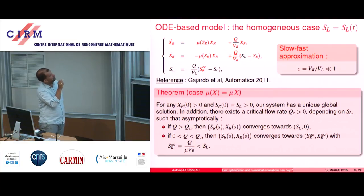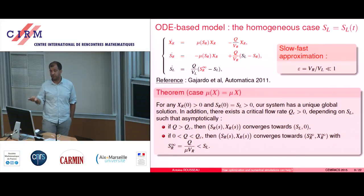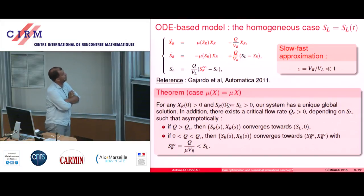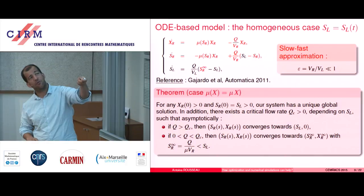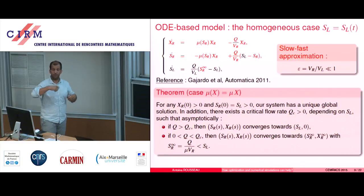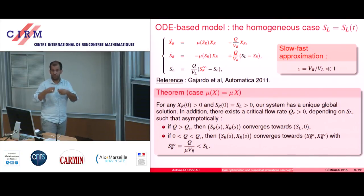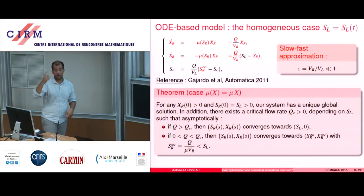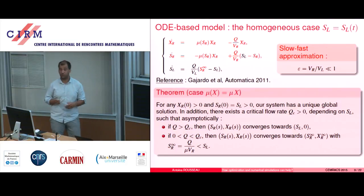But if you have a positive initial concentration of biomass and a positive concentration of pollution, then there is a critical flow rate Qc, which is such that if you pump faster than Qc, then you're going to go too fast. Your bioreactor won't have the time to clean the water, to be saturated by the water coming from the lake. And at some point, you will converge towards SL0, which means you will have SL everywhere in the system — in the lake and also in the bioreactor. You will just make the water turn between the two systems, but you won't clean anything. The biomass will be lost.